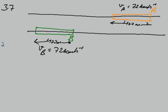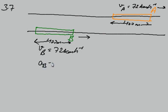Now, the driver of B decides to overtake A and accelerates at 1 m/s². Since B is behind A and both are initially travelling with the same velocity, B cannot overtake A — the separation between them remains the same. To overtake, the driver of train B decides to accelerate at 1 m/s².